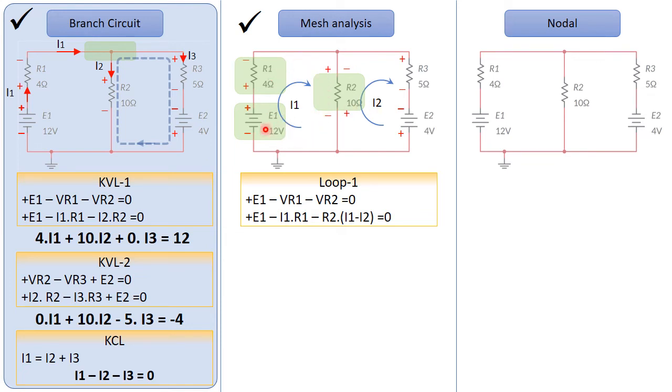When we write the first loop here, we assume that this current is the highest current, so it's I1 minus I2. Now, we go to the second, and this is the equation here.